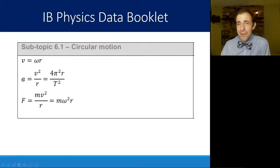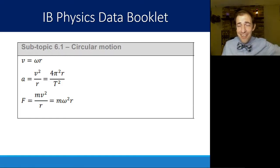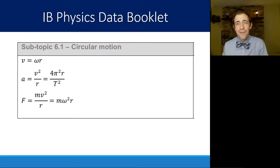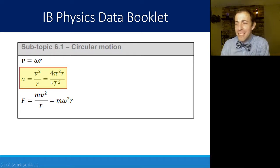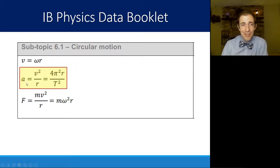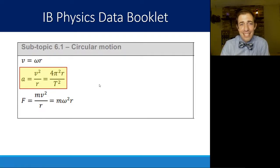In your data booklet this is found in subtopic 6.1. We're taking a brief detour from topic 2 to topic 6 because circular motion is interconnected with motion and forces. The acceleration equations are: a = v²/r, or a = 4π²r/T². You do not need to use the full derivation — you can just use either of these two equations directly.